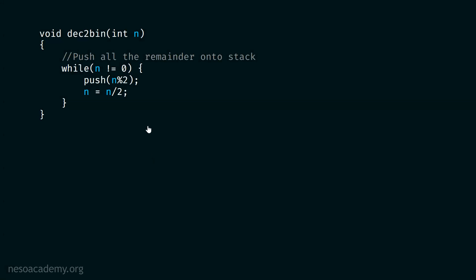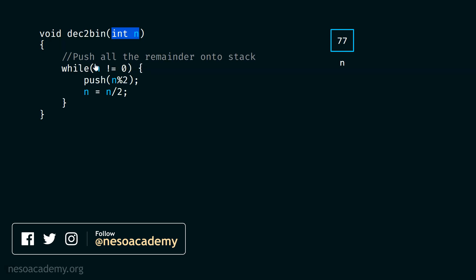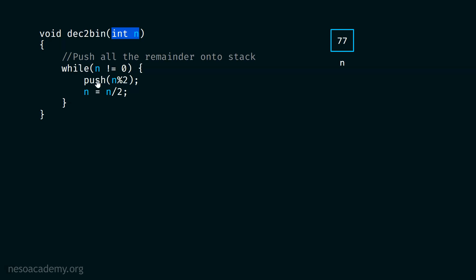Here is our dec2bin function. It receives the decimal value in variable n — for example, 77. Inside, I use a while loop checking if n is not equal to 0. Inside the loop, I call push passing n mod 2 to push the remainder onto the stack. Then I update n by n divided by 2. We repeat this until n becomes 0.